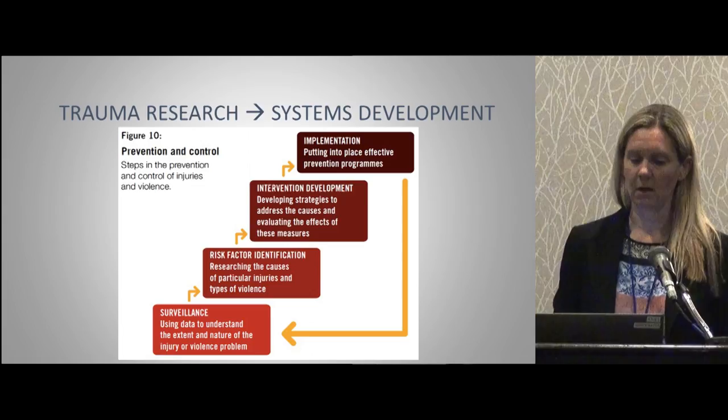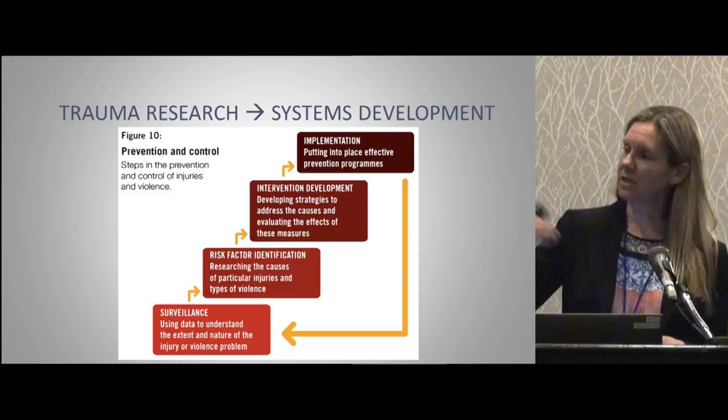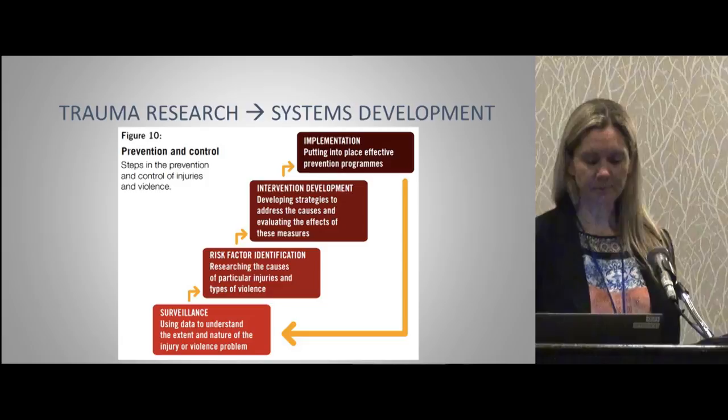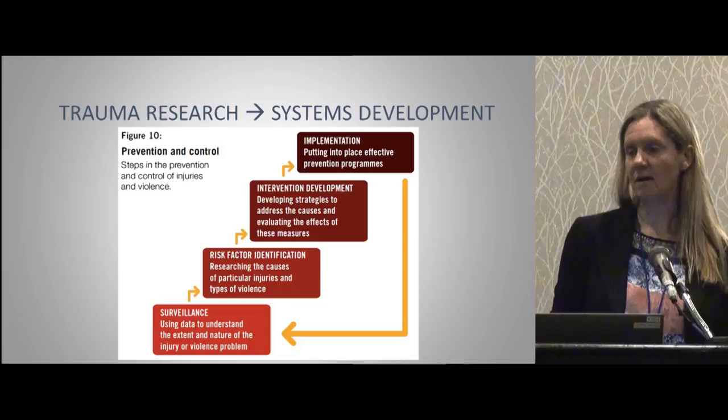Trauma research can then lead into trauma systems development. Starting with surveillance — knowing what's happening in the community — you can then identify risk factors, develop a plan to intervene, implement it, and go back to see if you actually made a difference. This is how you lead to policy changes and systems development within an area. And as we know from the example here in San Diego, systems development saves lives.